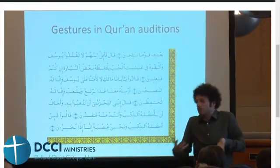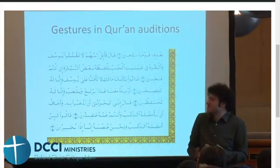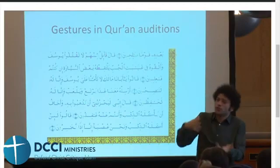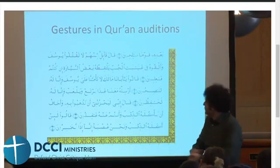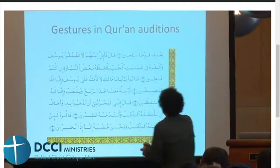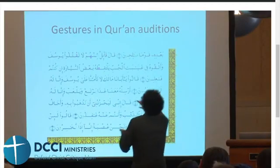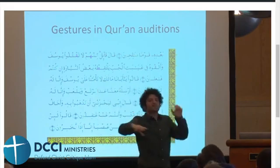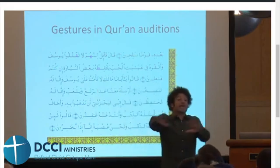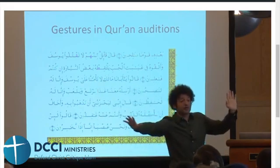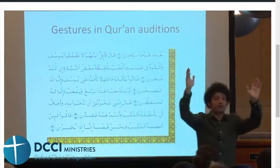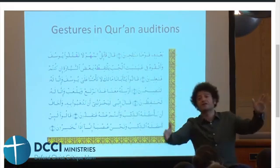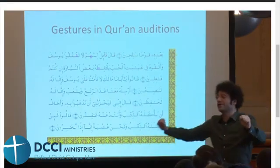Reciters were also uneasy with that. So what do we do with that missing n? What they did is they put a circle right here and said, we have to stick with the script — we can't change it. This is how the companions codified the Quran.